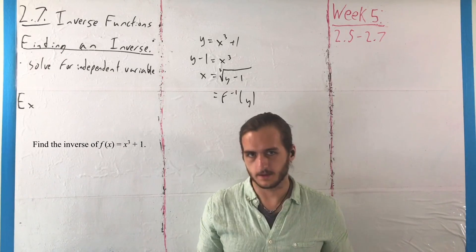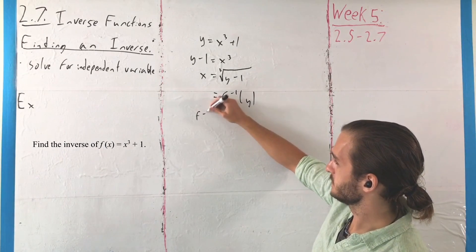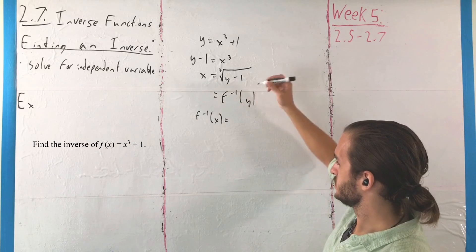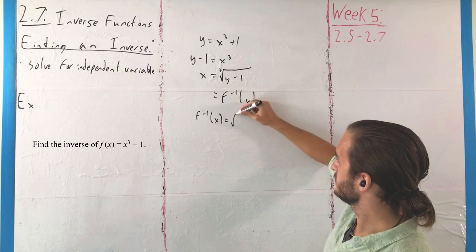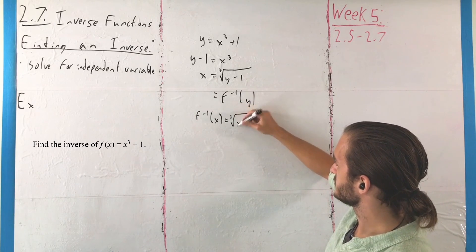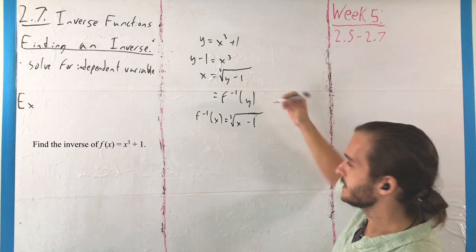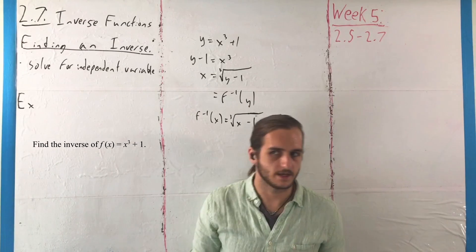But if you wanted to write this as f inverse of x, you could just say f inverse of x equals the cube root of x minus 1. And it has the same meaning, it's just a little bit less clean.